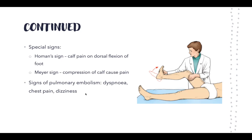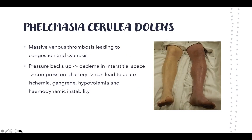Signs of pulmonary embolism — if the patient has shortness of breath, chest pain, or dizziness — may indicate the DVT has dislodged and traveled into the lung circulation. A very severe form of DVT is phlegmasia cerulea dolens, a massive venous thrombosis leading to congestion and cyanosis. A large thrombosis causes pressure buildup, with fluid backing up into the interstitial spaces, creating edema. This pressure can then compress arteries, leading to acute ischemia, gangrene, and systemic instability — requiring immediate recognition and treatment.